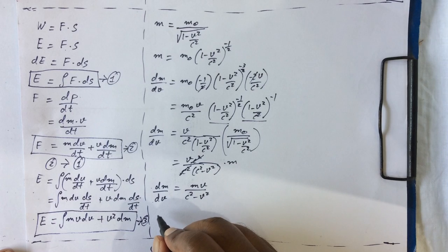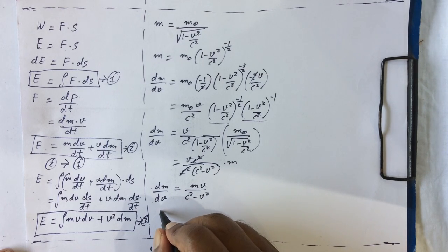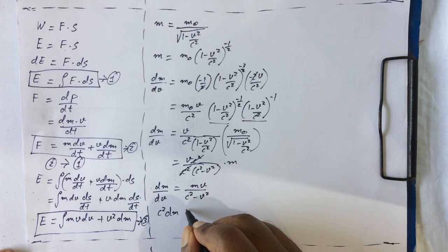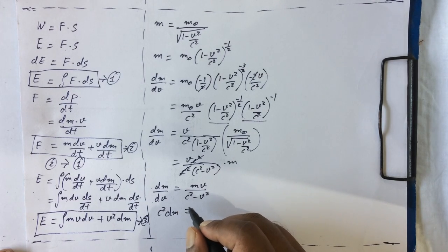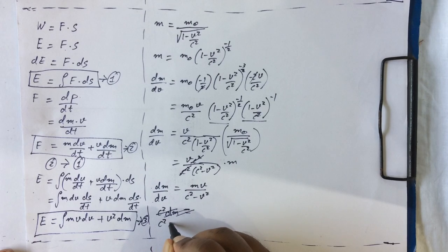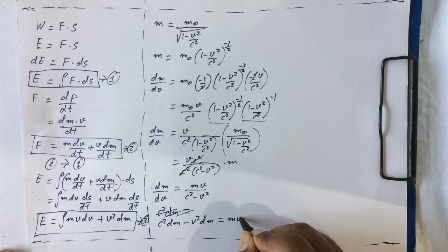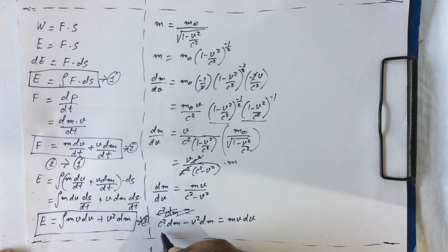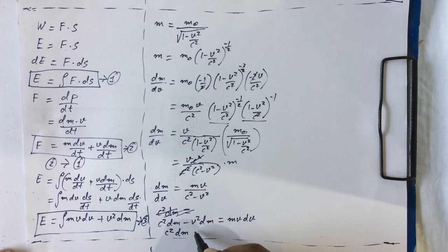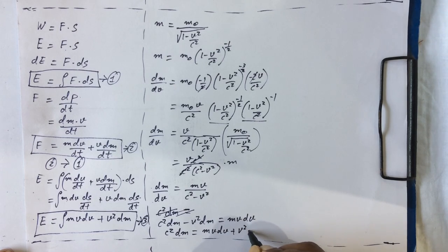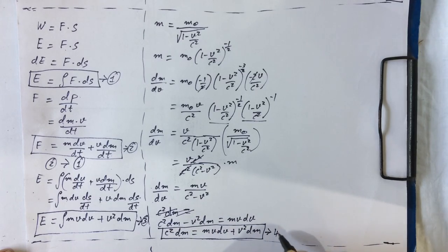If we resolve this equation, we will get c² dm minus v² dm equals mvdv. So you can rewrite this equation as c² dm equals mvdv plus v² dm. We will consider this as Equation 4.